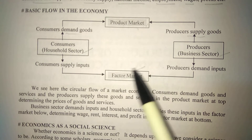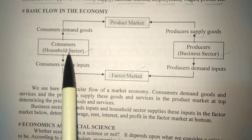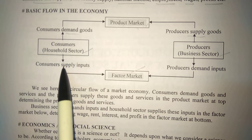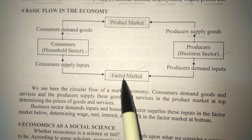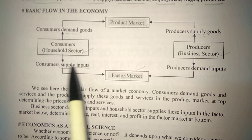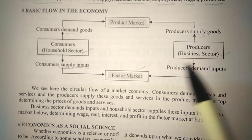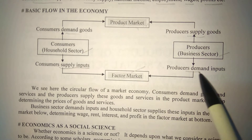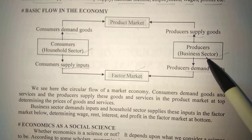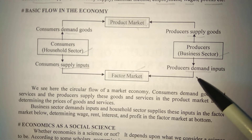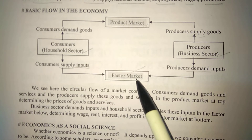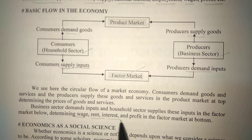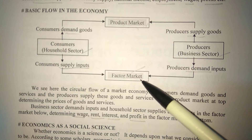Similarly, in the factor market, consumers and household sector members come to sell their services — land, labor, capital — supplying inputs here. Producers and business firms come to this market to demand these factors for production, because firms need land, labor, and capital to produce. So in the factor market, factor prices are determined — for example, wage, rent, interest, and profit.